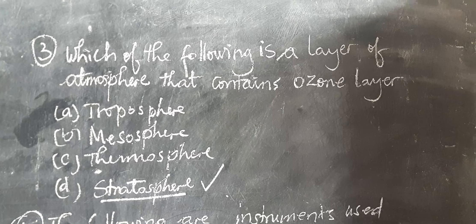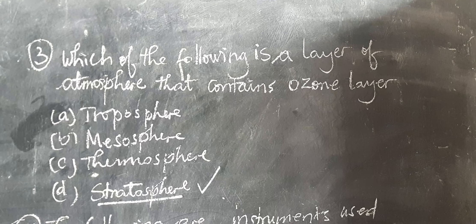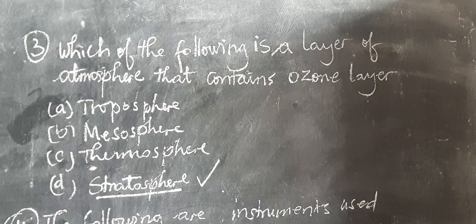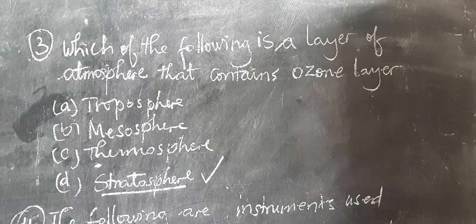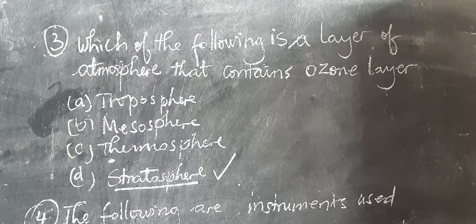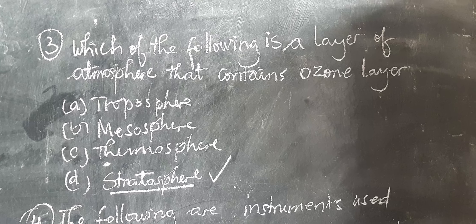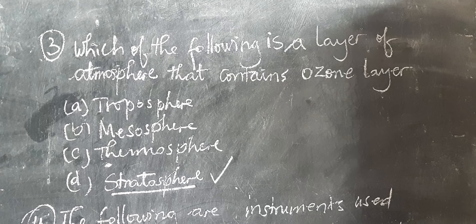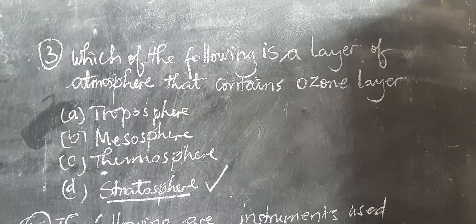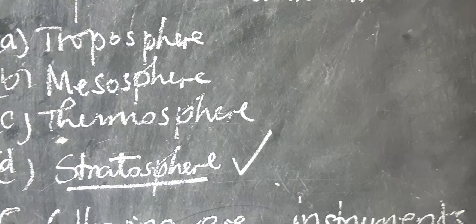Question number three is asking: which layer of atmosphere contains the ozone layer? A. Troposphere, B. Mesosphere, C. Thermosphere, D. Stratosphere. The correct answer is Stratosphere — the ozone layer is found in the stratosphere. It is easy and clear to understand.